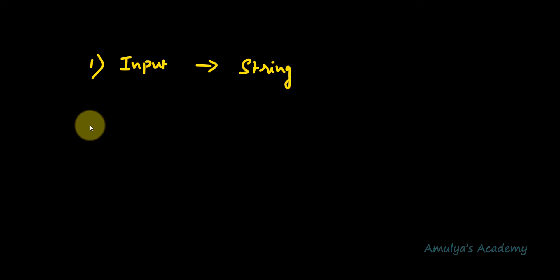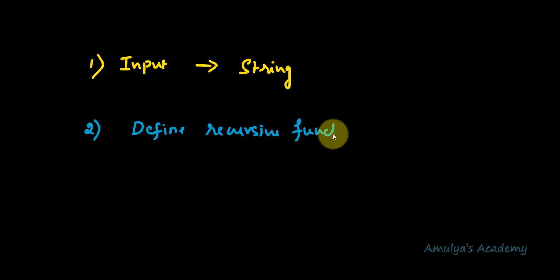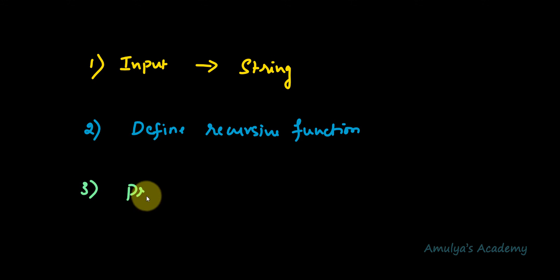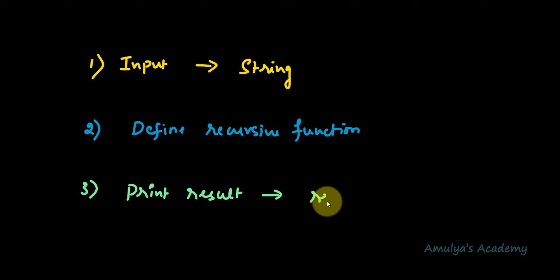Now coming back to the program, we need to reverse the given string using recursion. To write the program we will follow three steps. First, we need to take the input from the user. Second, we need to define a recursive function which will reverse the string — the main operation will be done here. Lastly, we need to print the result, which is the reversed string.